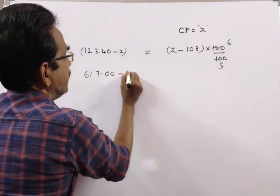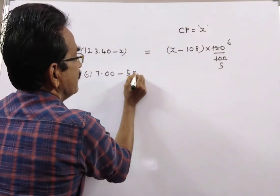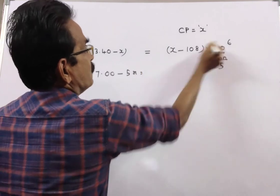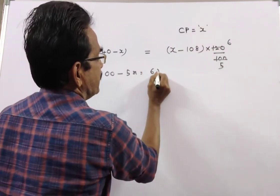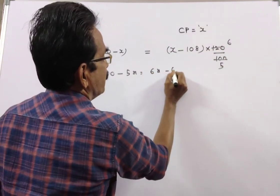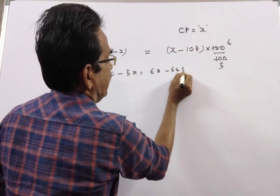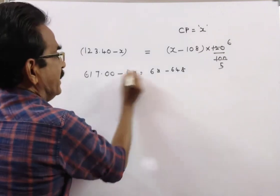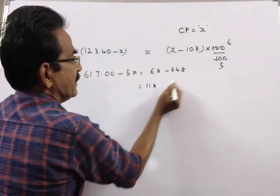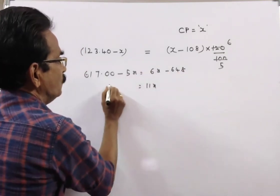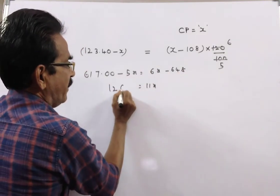Solving the equation: 17 minus 5X is equal to 6X minus 648. Therefore, 11X is equal to 1265.